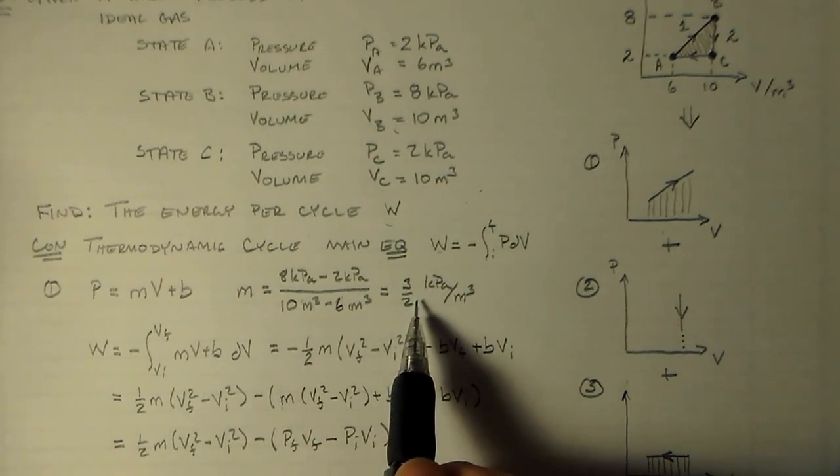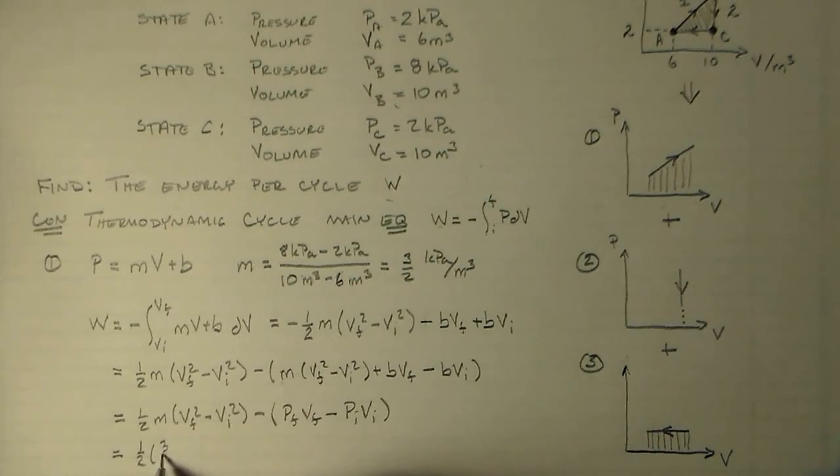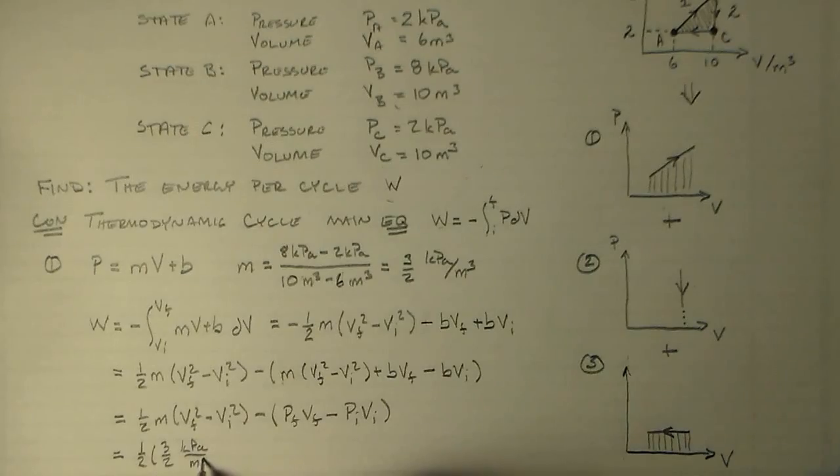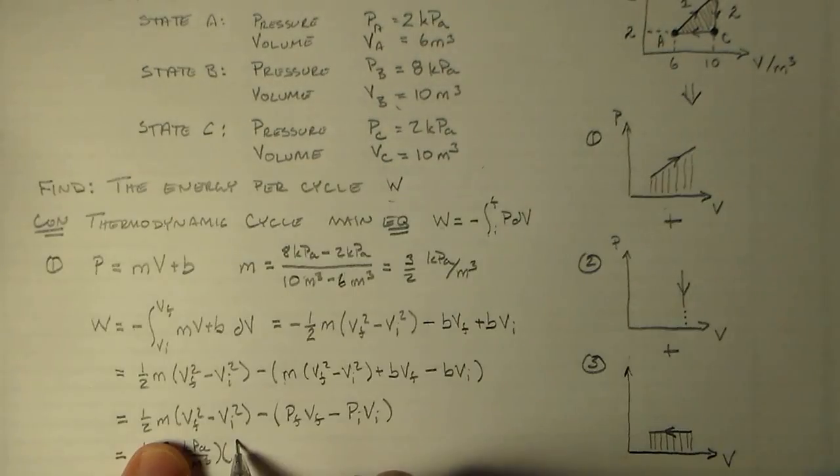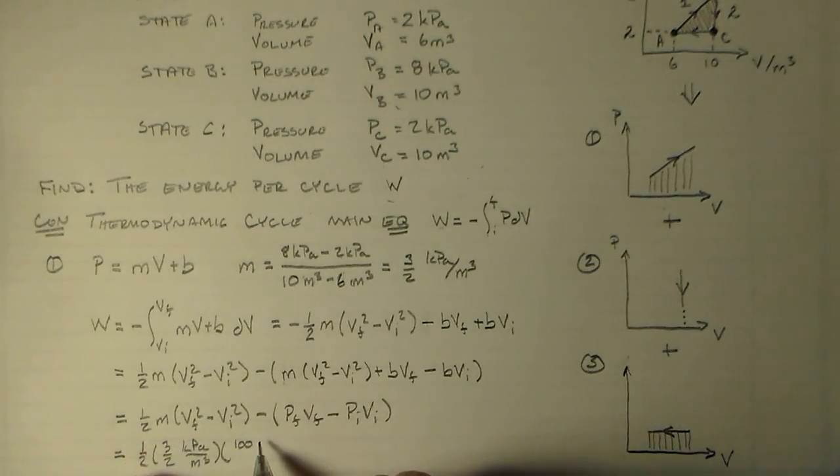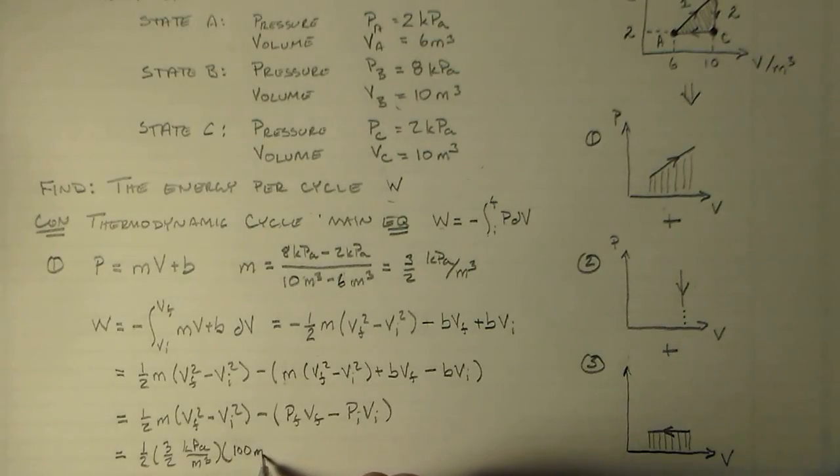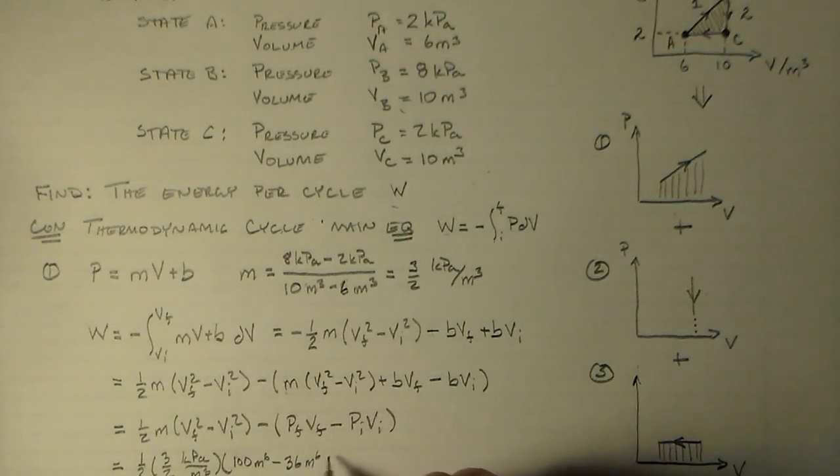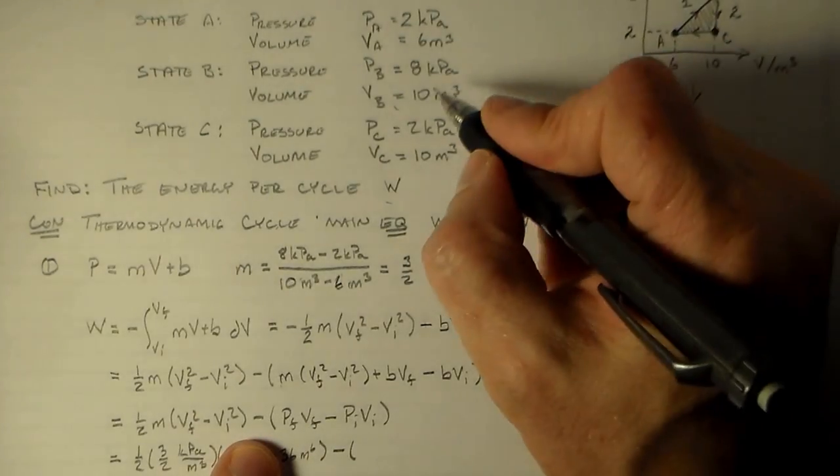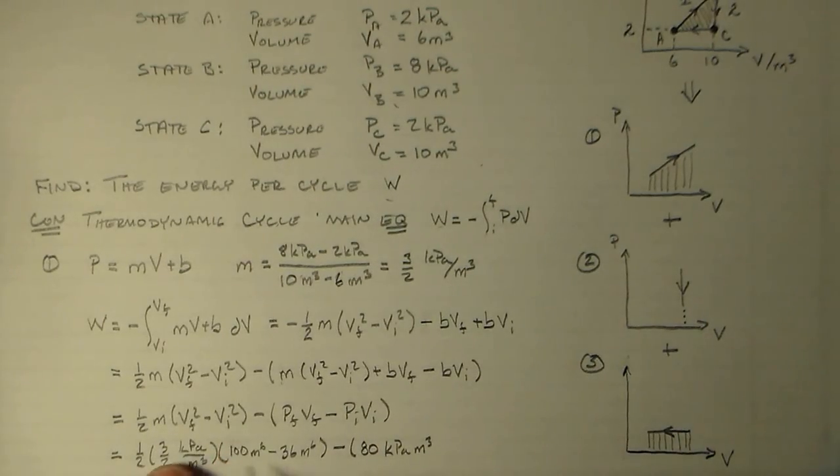I've calculated the M up here, so this is equal to one-half times three-halves kilopascals per meters cubed. This goes from A to B. State B is 10, so the square is 100, so we have 100 meters to the sixth minus 36 meters to the sixth minus PFVF, which is 10 by 8, so that's 80 kilopascals times meters cubed.